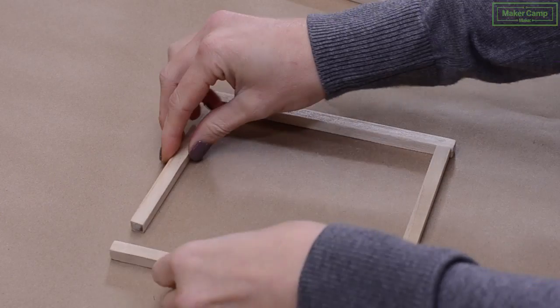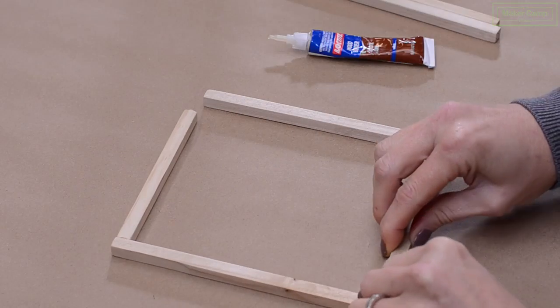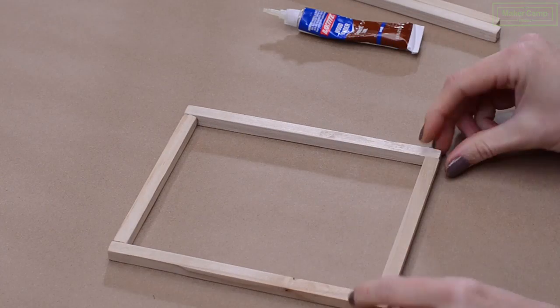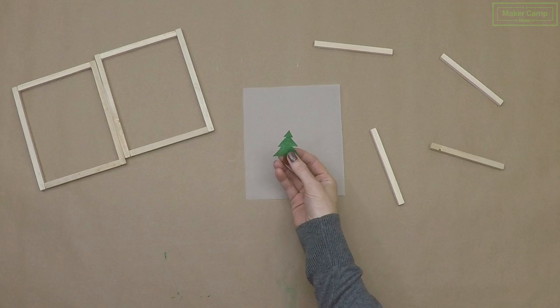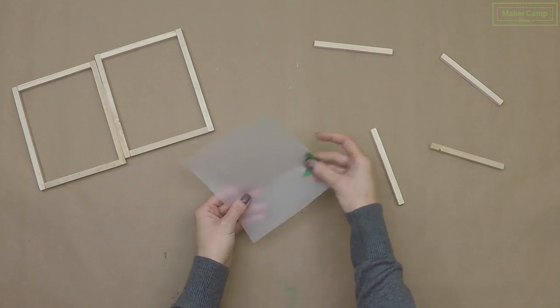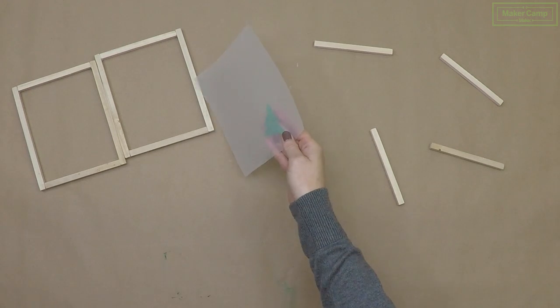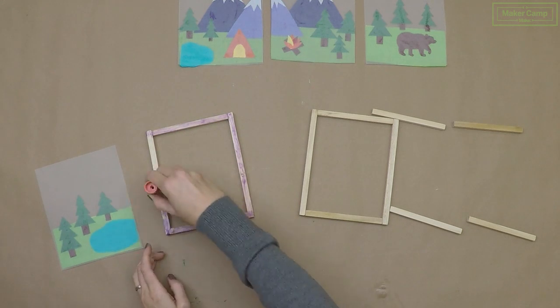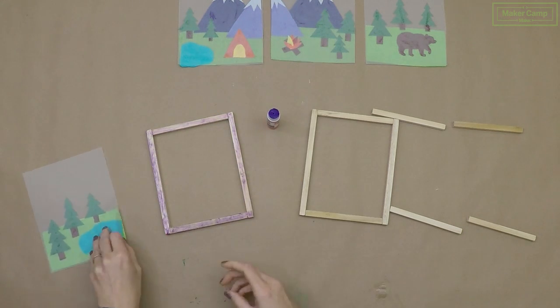We'll make two sides of our frame first. These are about five inches wide by seven inches tall. Use different colors of tissue paper to create your design on your vellum. Use a glue stick to attach your designs to the vellum and then also use a glue stick to attach your vellum to the wood frame.